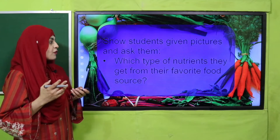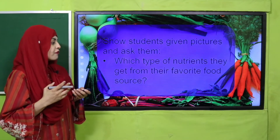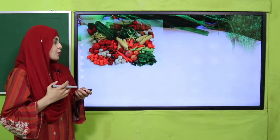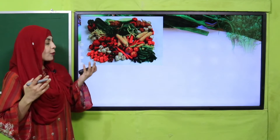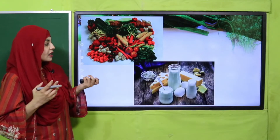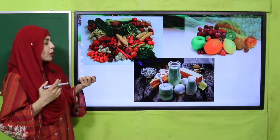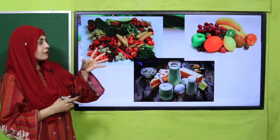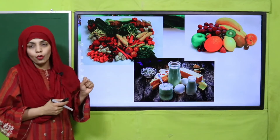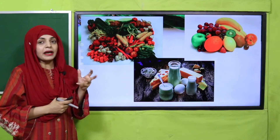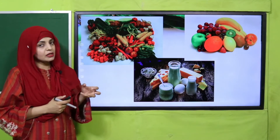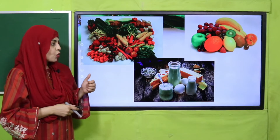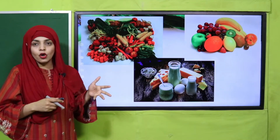Now is the time for an activity. Students are given pictures and asked which type of nutrients they get from their favorite food source. You can choose from different food groups — for example, I like fruits more and I get vitamins from them. Select your favorite food group.